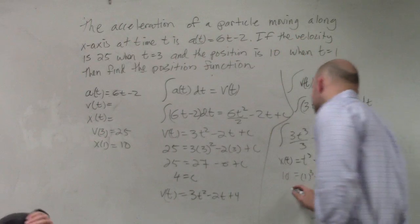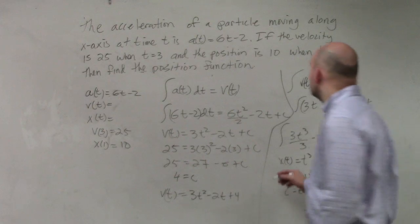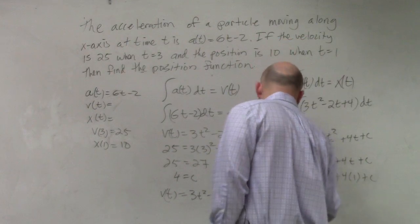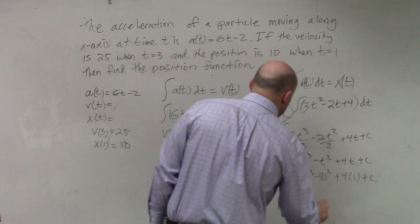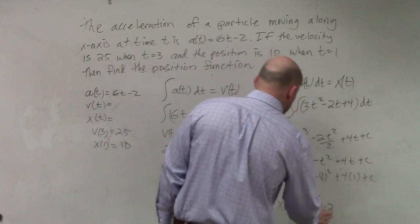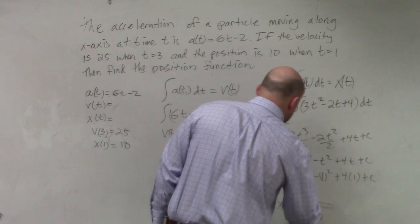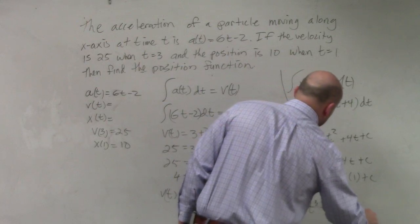And we could say that c is equal to 6. So therefore, our position function is x of t equals t cubed minus t squared plus 4t plus 6.